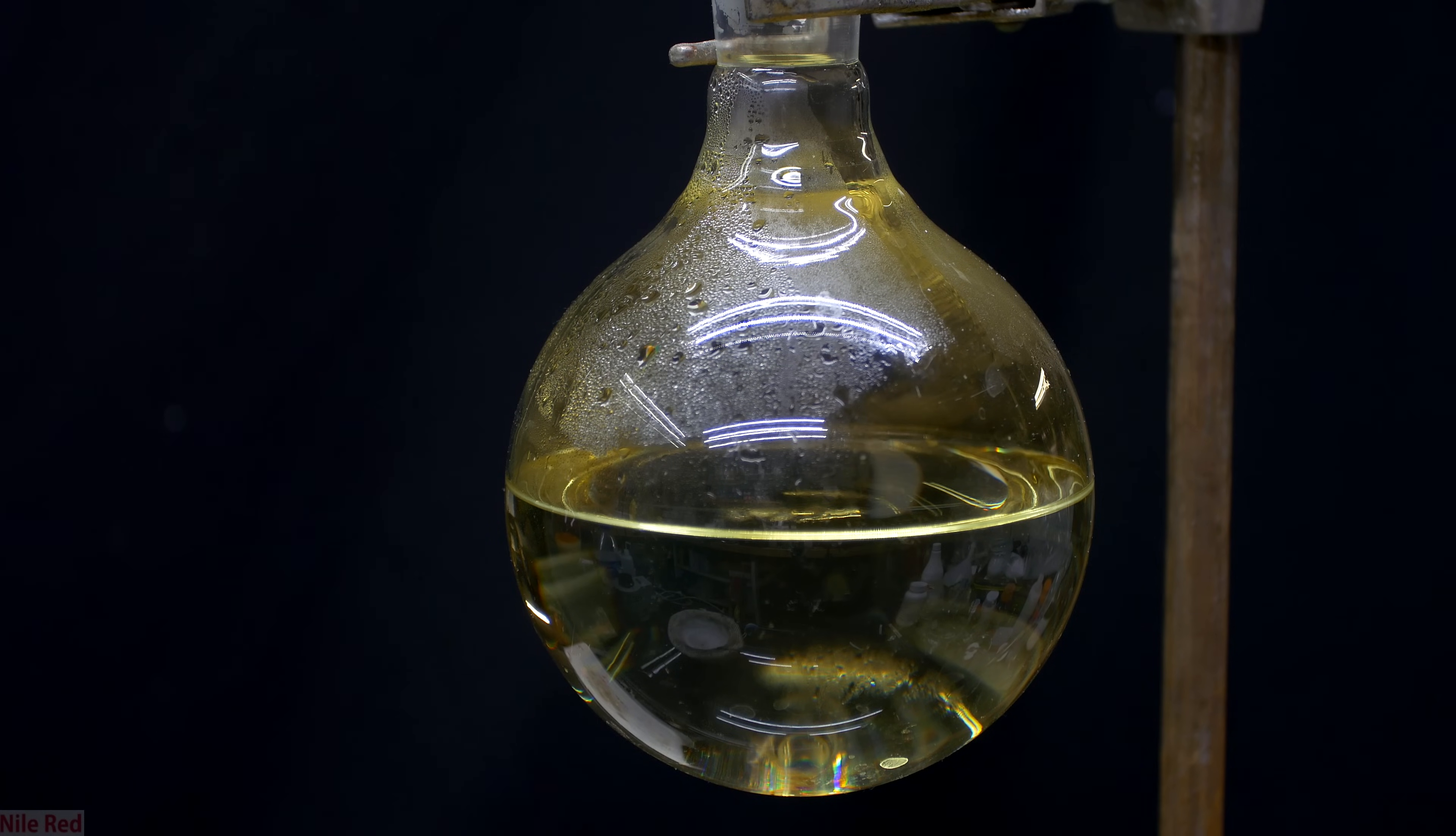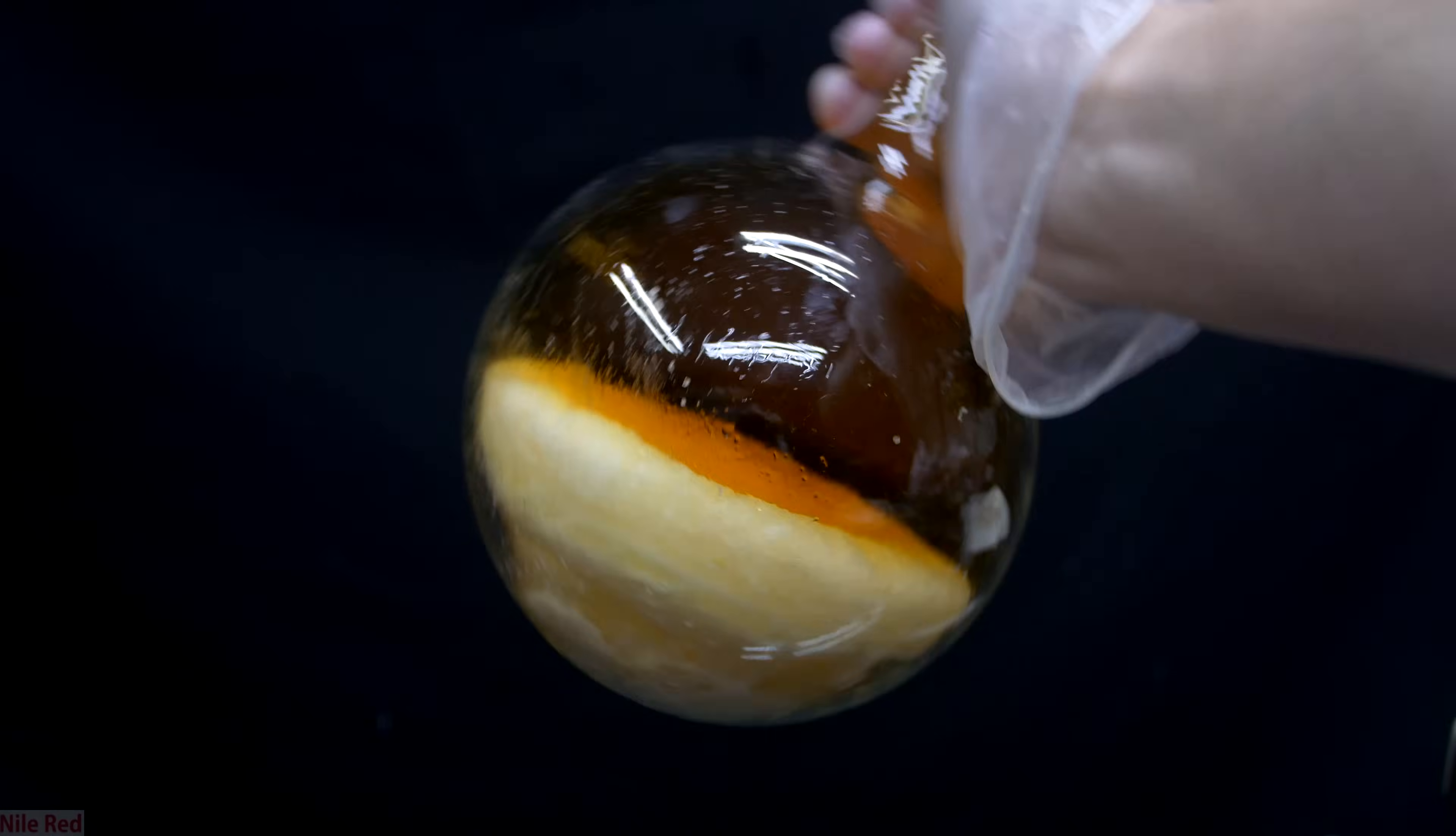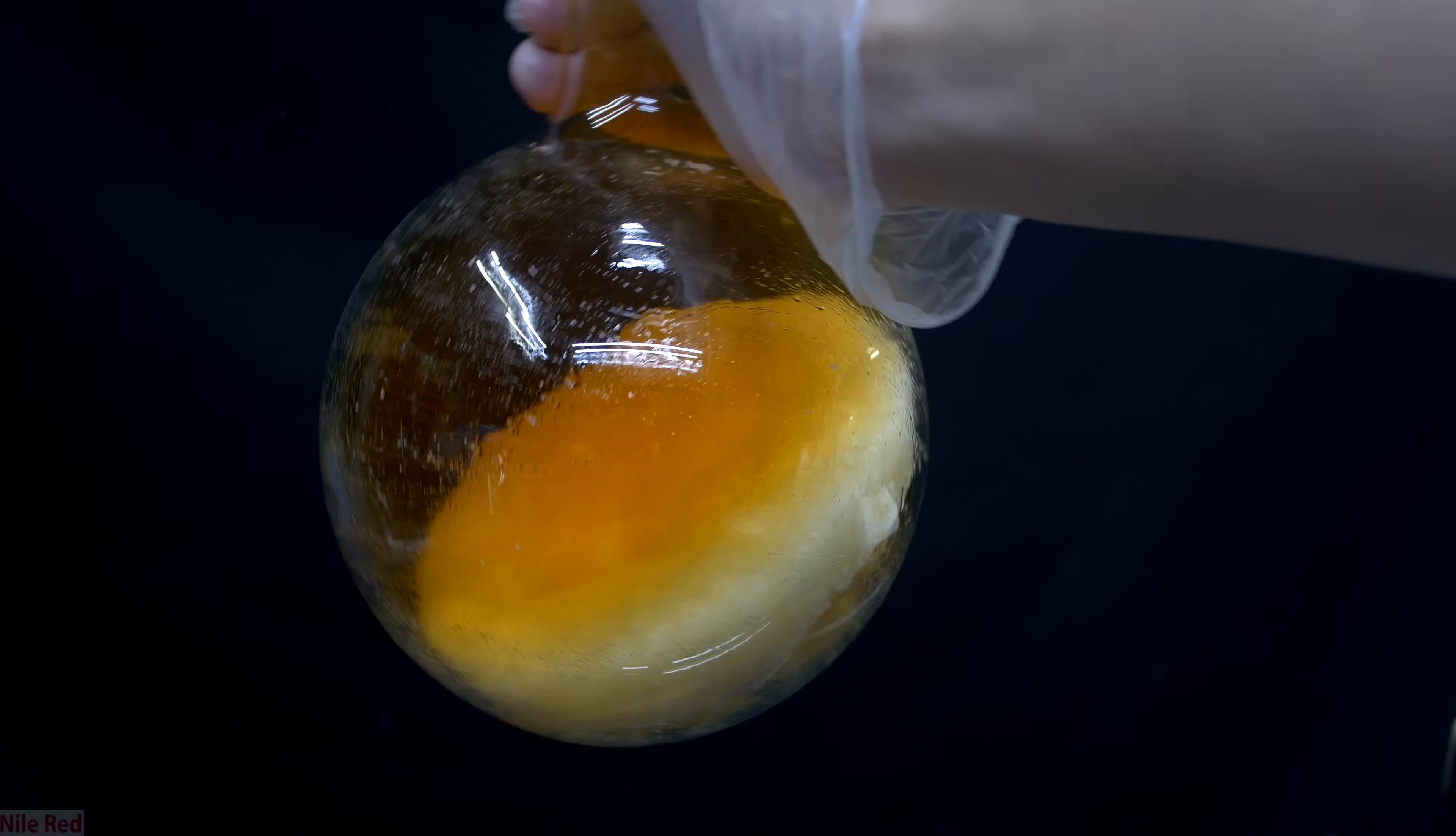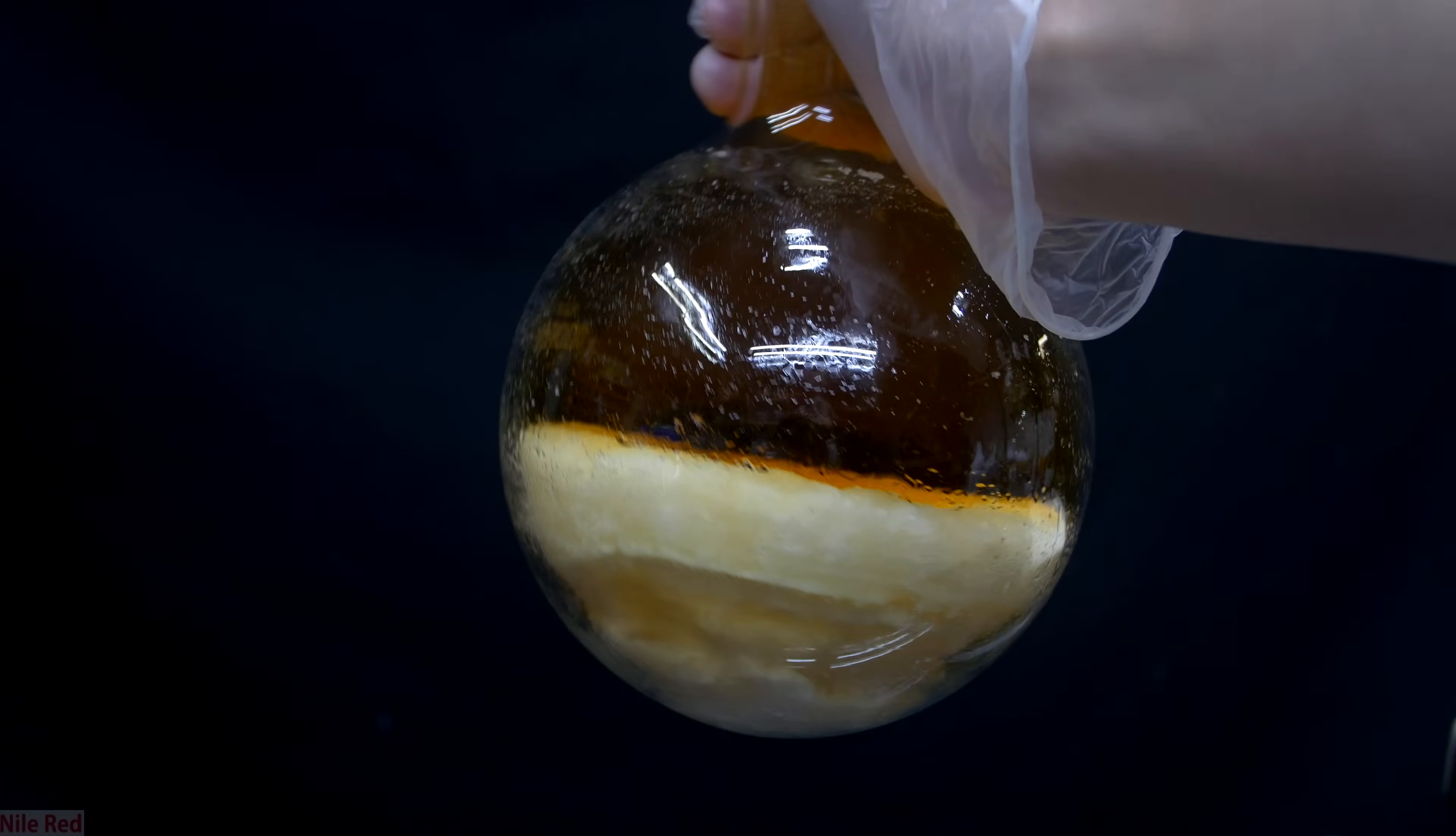When we look at the receiving flask, we have a lot of very dilute yellowish nitric acid and we're gonna need to purify this. The salt that's left in the reaction flask is pretty solid, but you don't have to worry too much because it's quite water soluble. It can be easily cleaned out by rinsing the flask several times with hot water.